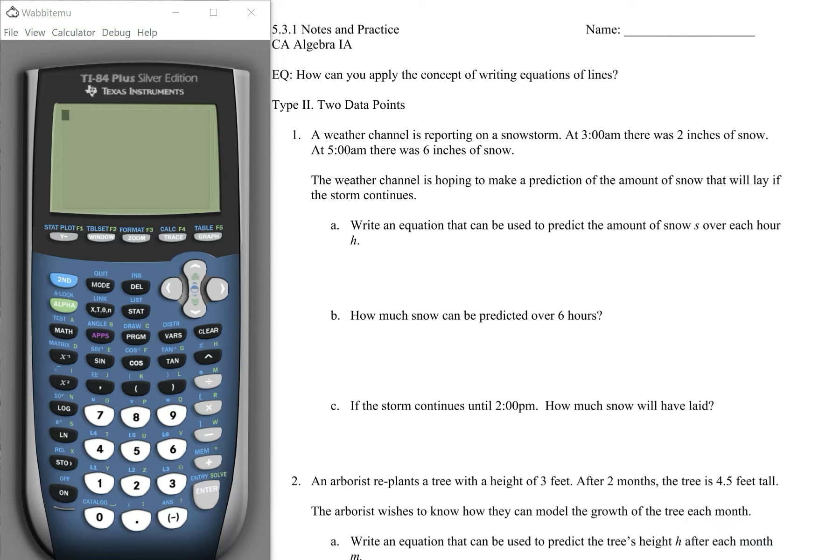We call this data points because we have two different points with which we want to use. We have at 3 a.m., or we can say 3, there was two inches of snow. So 3,2 is one point. At 5 a.m. there was six inches of snow. So we can say that is 5,6.